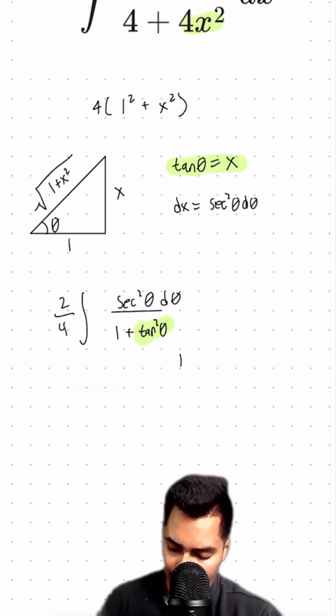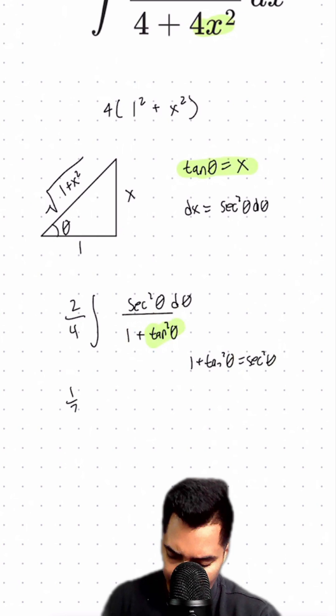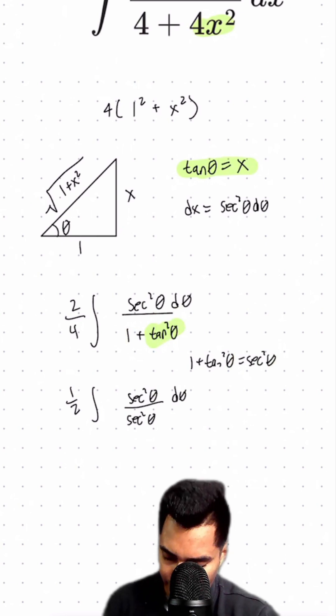Recall the identity 1 plus tangent squared equals secant squared theta. Replacing this into our denominator, we have one-half times the integral of secant squared theta over secant squared theta. These cancel out beautifully.